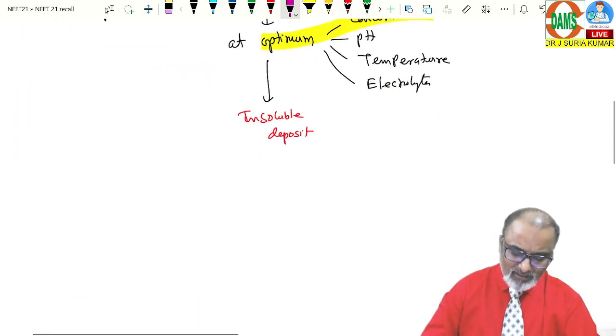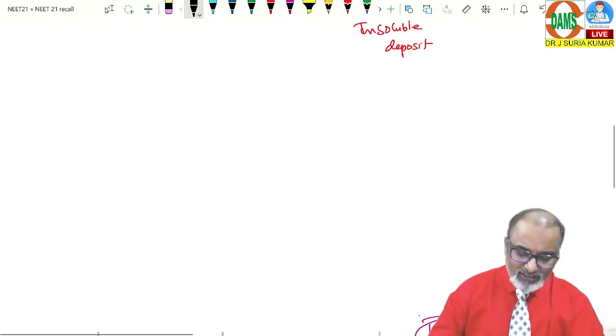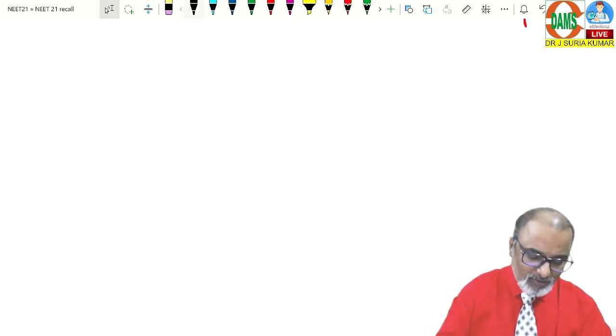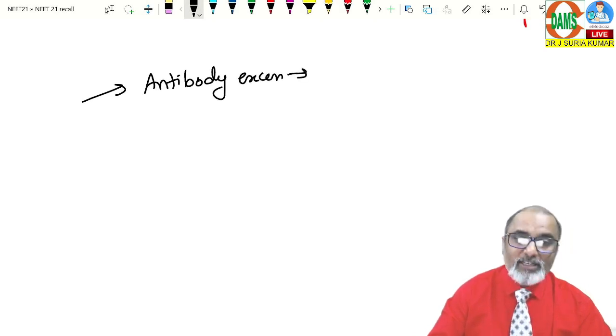And in brucellosis, false negative due to three reasons. There are three reasons are there. Number one, antibody excess. We call it as prozone phenomenon.